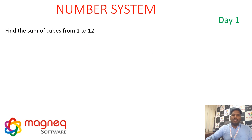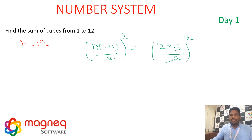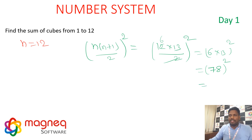Sum of cubes, n = 12. Formula: [n(n+1)/2]² = [12 × 13 / 2]² = [6 × 13]² = 78² = 6084.